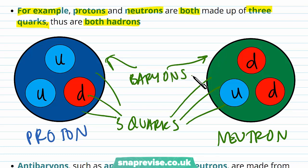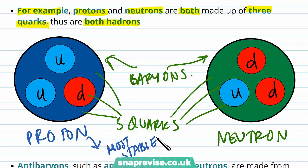Because protons are the lightest baryon, this tells us that protons are the most stable. And if they're the most stable baryon, this means that all baryons are eventually going to decay to protons.